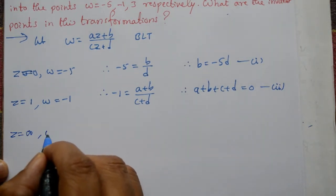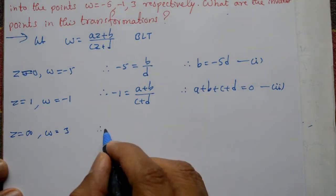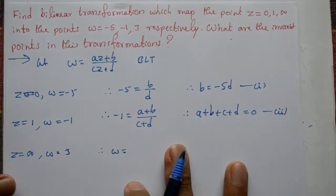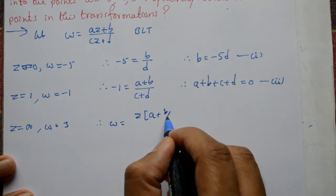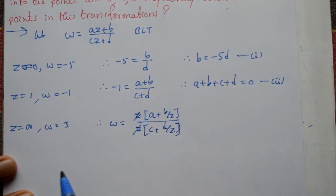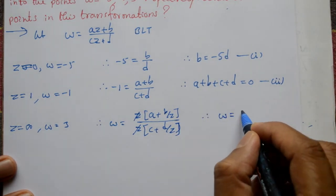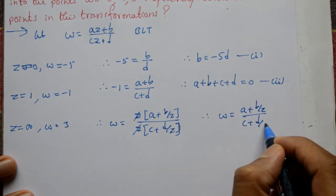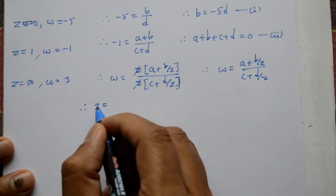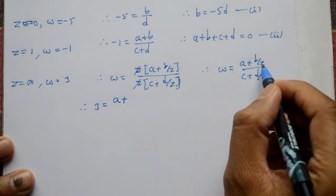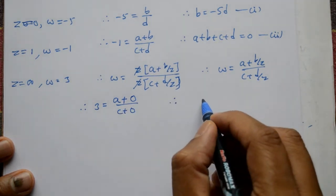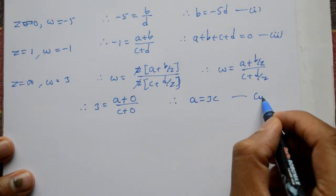Third: z = infinity and ω = 3. Direct substitute karne par values nahi milegi, isliye z se divide karenge. ω = (a + b/z) / (c + d/z). Jab z → ∞, then b/z and d/z → 0, so 3 = a/c, therefore a = 3c. This is equation number 3.